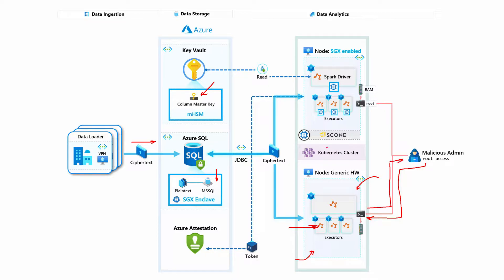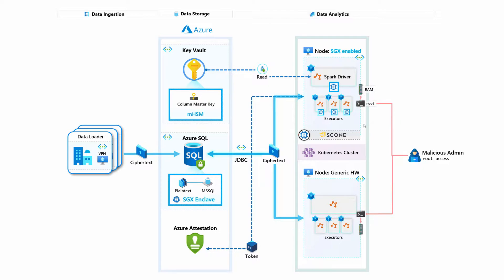The second scenario involves taking the Spark runtime and running it on a DC series VM — a confidential computing VM within Azure. We'll run Spark within the SCONE runtime and see how this ensures that even with root access, malicious admins or hackers cannot get access to our encrypted data within Spark when performing rich analytics.